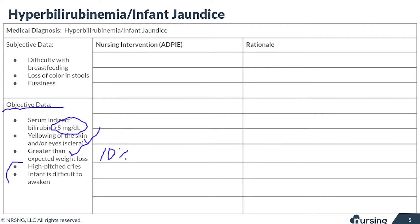These last two symptoms are associated with a change in neurological status. Remember, high levels of bilirubin can cause brain damage. Two signs of that in your newborn might be high-pitched cries and an infant that is difficult to awaken.